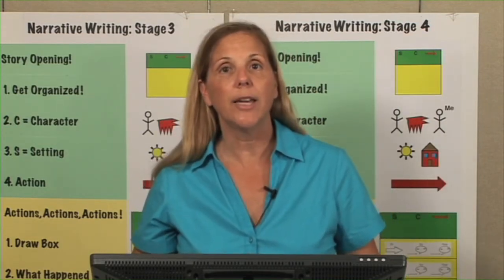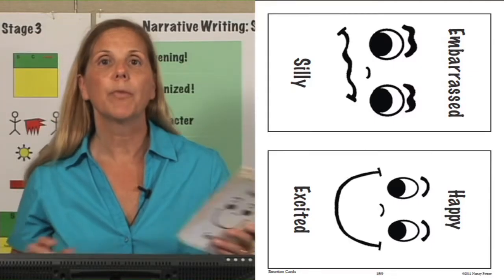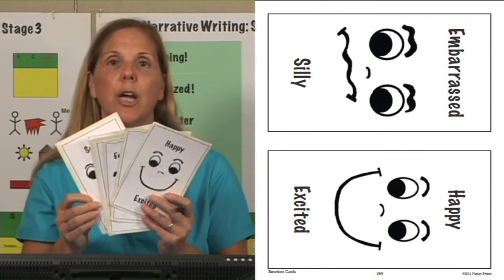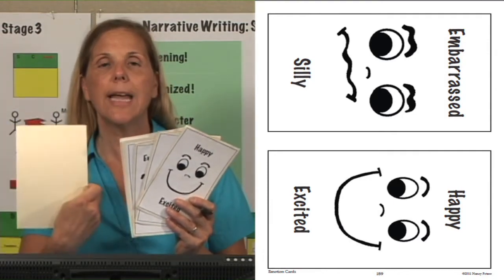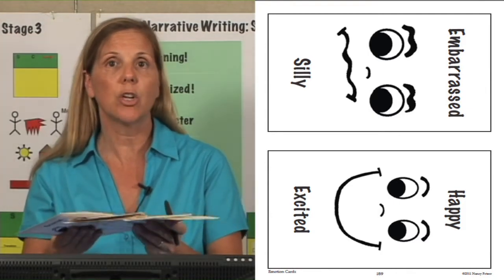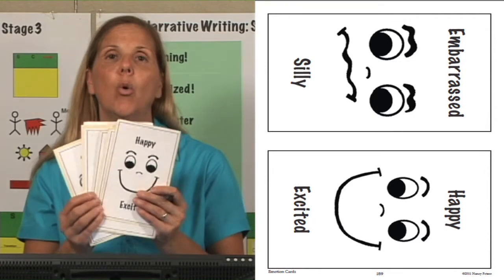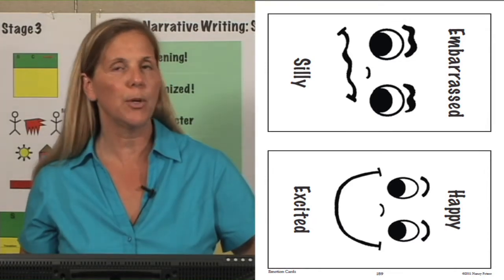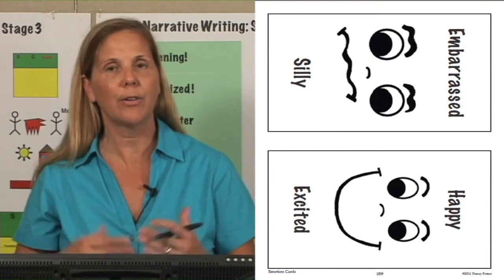On pages 159 to 162 are all of the large size emotion cards. You could cut these out, mount them on tag, and then you can have your children in whole group lessons choose a card if you need to make an action or the next action in a story interesting. This is a nice tool to help your kids come up with better and more interesting stories.